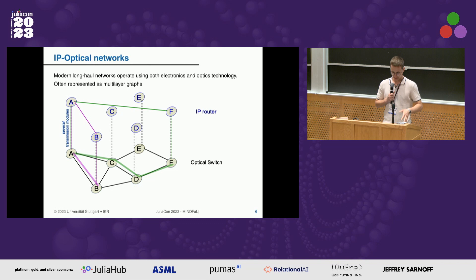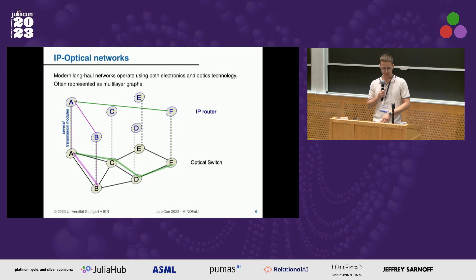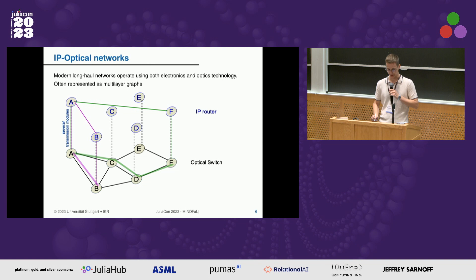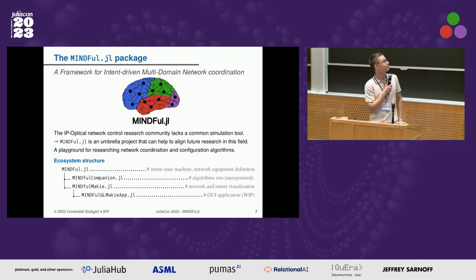The last slide of the theory part is about IP optical networks, which are networks that operate using both electronics and optics technology, and they are often represented as multi-layer graphs. Here I visualize one where the lower layer is the optical fiber layer and the higher layer is the IP layer. A specific node would be composed of an IP router and an optical switch.